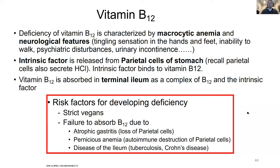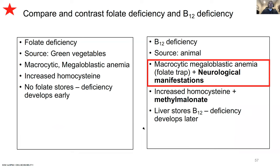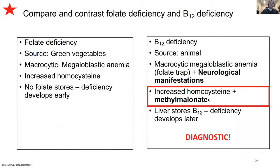Neurologic manifestations help identify B12 deficiency. If the question doesn't specify neurologic symptoms but shows increased methylmalonate in the urine, it's B12 - that's one of the two major steps that needs B12 as a cofactor. If you see methylmalonate in the urine, you know it's B12 deficiency. They could then ask what additional symptoms you'd see, and you'd add the neurologic symptoms. Summary: folate - FIGLU in urine; B12 - neurologic manifestations and methylmalonate. Definitely know that.